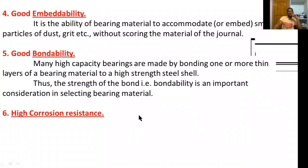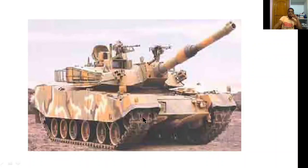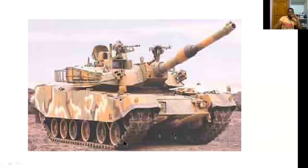Another property is high corrosion resistance. The bearing material should not corrode under the action of lubricating oil. This property is of particular importance in internal combustion engines. For example, in machinery with wheel bearings, we use high-capacity bearings to withstand high compressive loads, and high corrosion resistance is required.